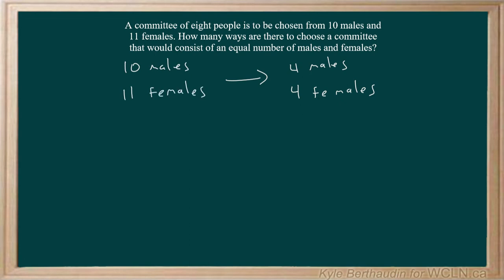So let's look at the males here first. If we have 10 males that we can choose from, that would be n equals 10. And we are choosing exactly 4 males. In other words, r equals 4.